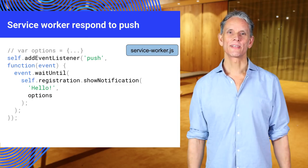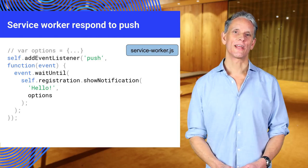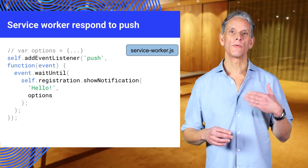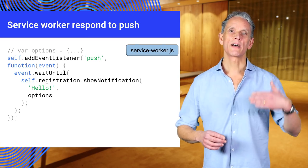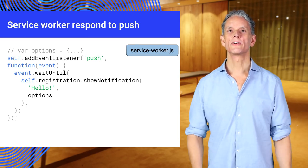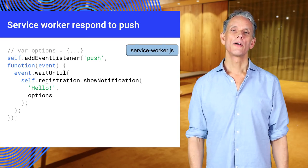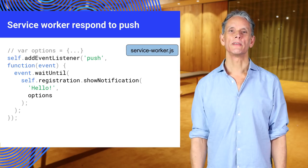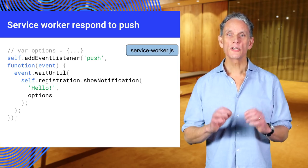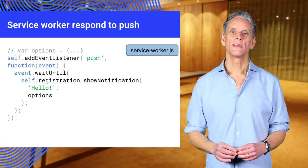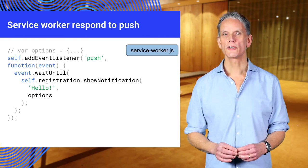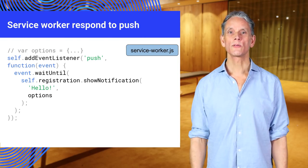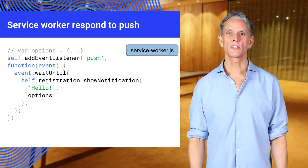The service worker can listen for push events. Push events are initiated by your back-end service through a browser's push service. This example shows a notification when the push event is received. The options object is used to customize the notification, which could contain the data that was pushed from the service.